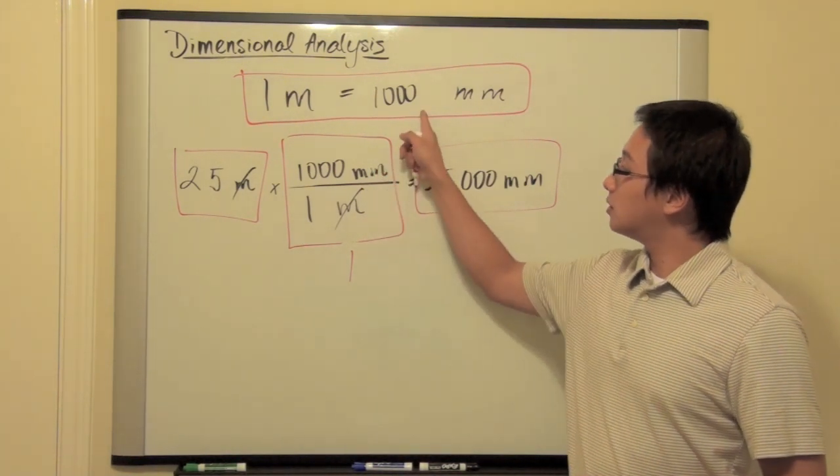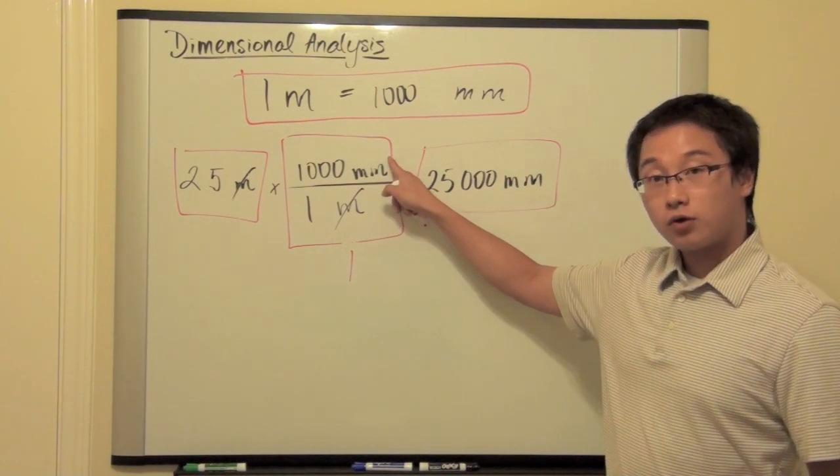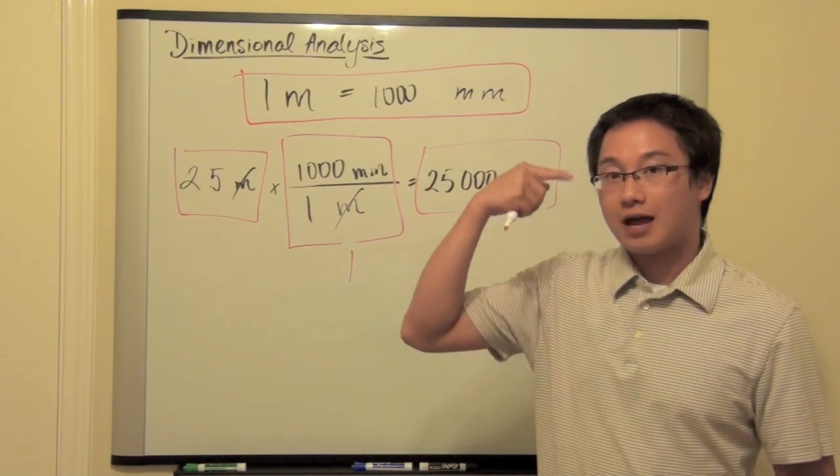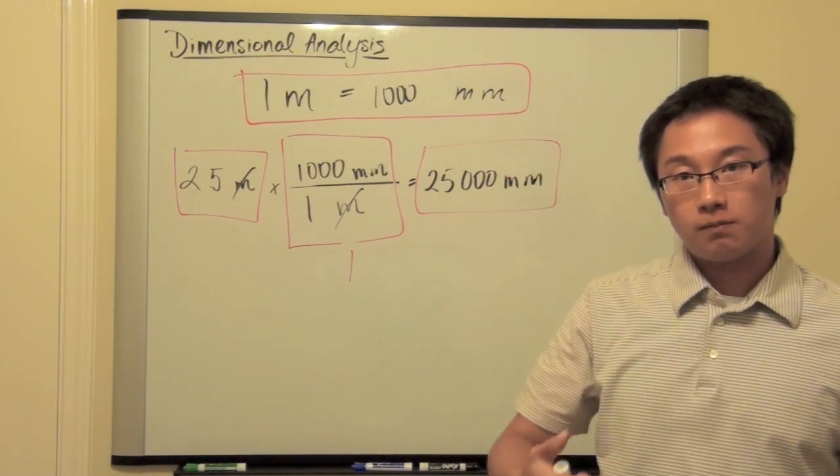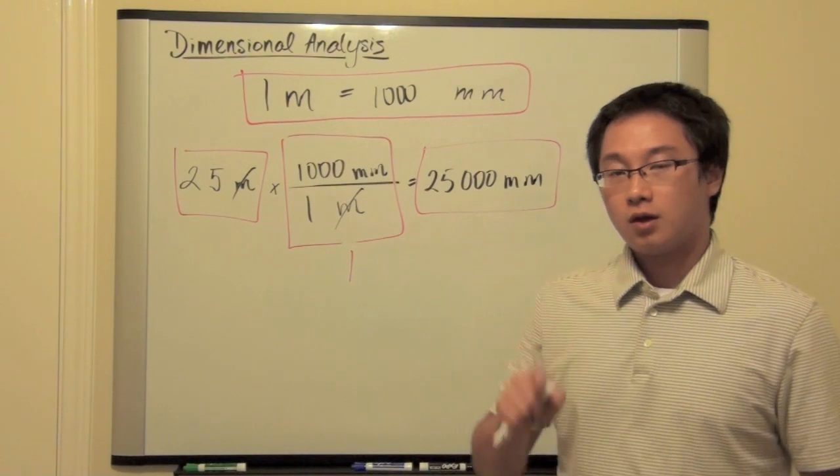This is equal to this. The numerator is equal to the denominator. Now, I want you to flash back to what you learned in middle school or in elementary school. Whenever you learn about fraction, think about this. If I give you a fraction, 4 over 4,